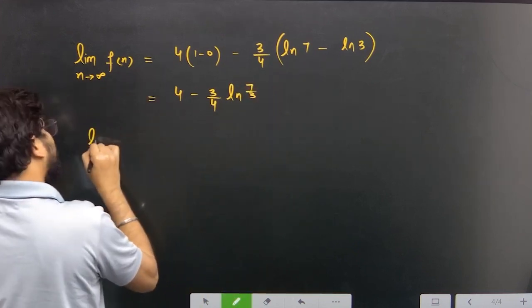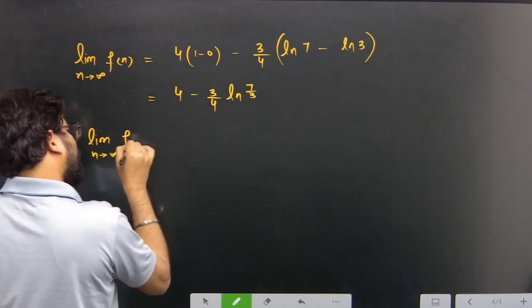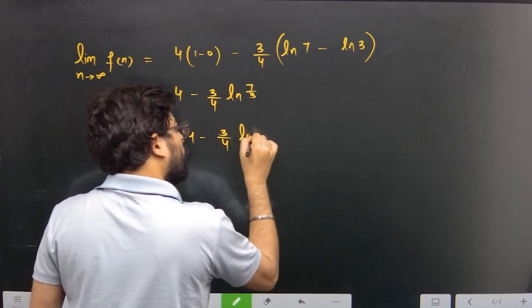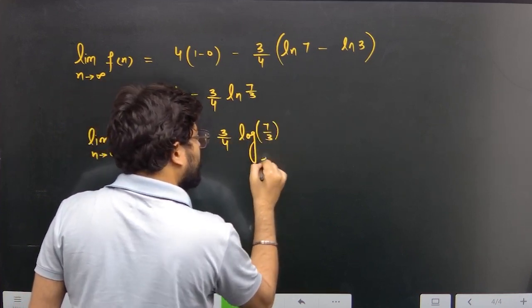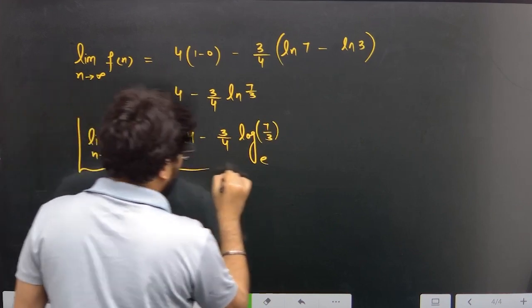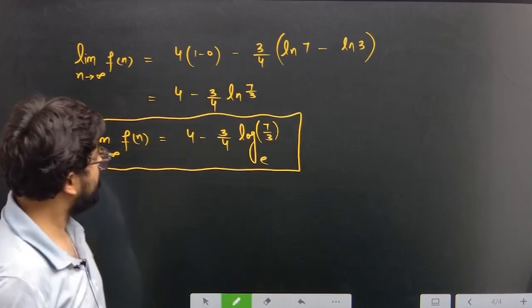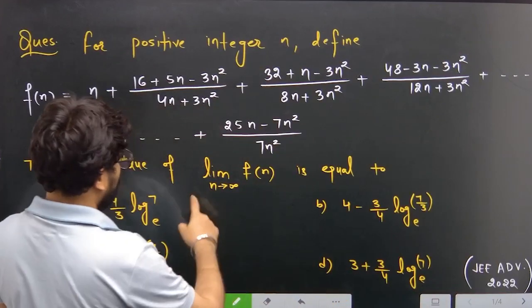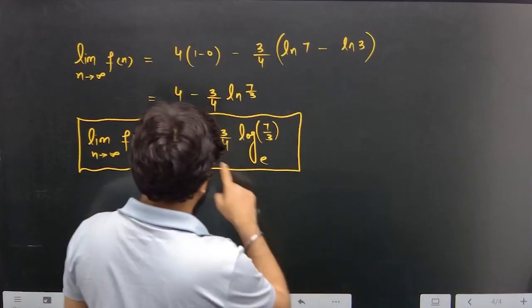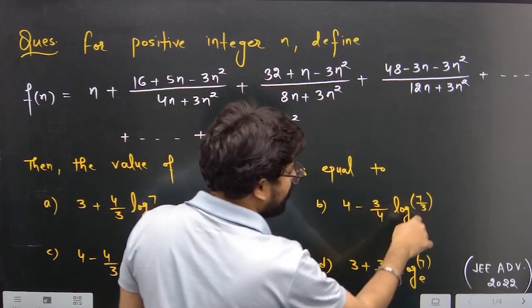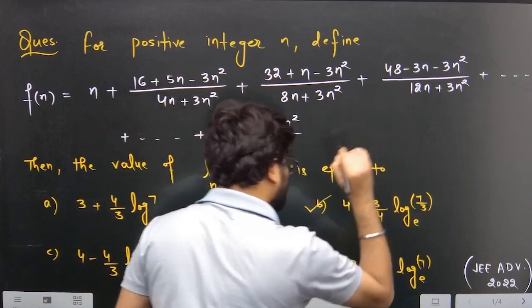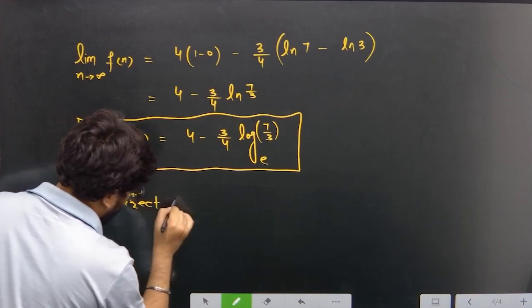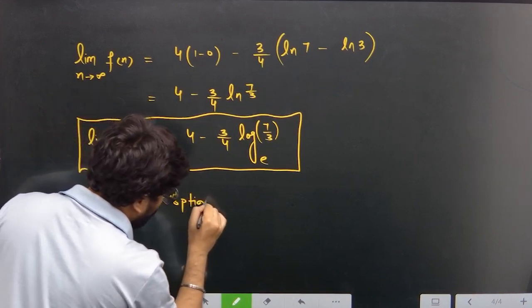So limit n→∞ of f(n) is equal to 4 minus (3/4)·ln(7/3) to the base e. Therefore the correct option is B.